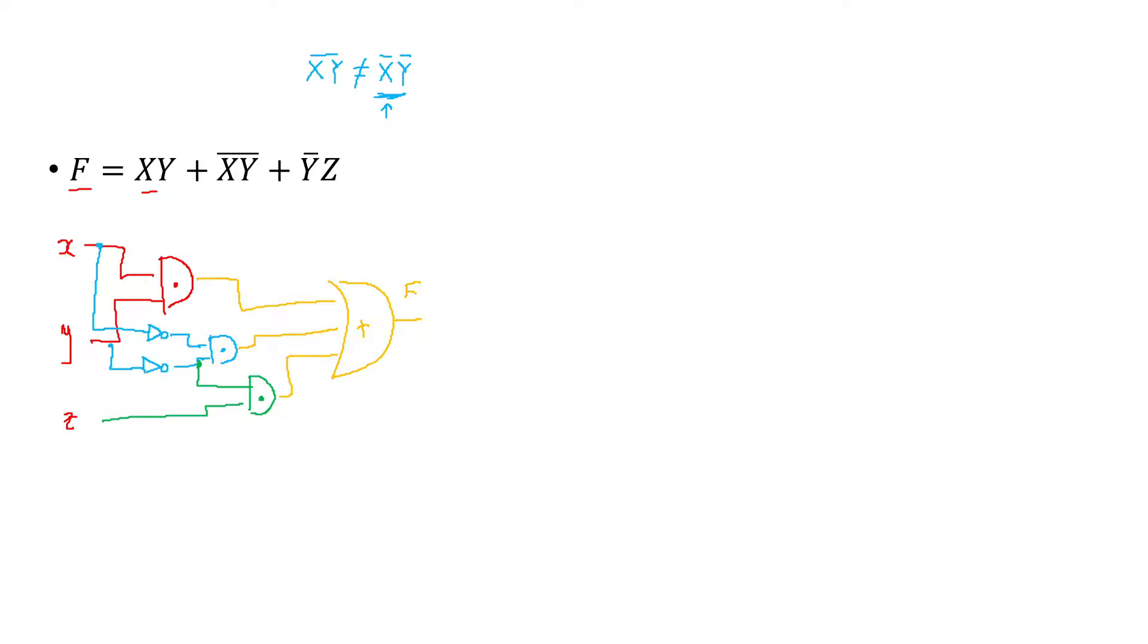Now let's do that truth table that we all love. Let's start by writing all the variables we have. Here's gonna be X, here's gonna be Y, here's gonna be Z, and we're gonna write a big line.